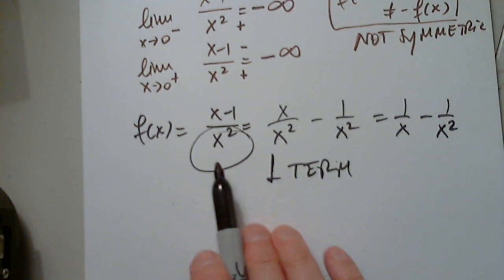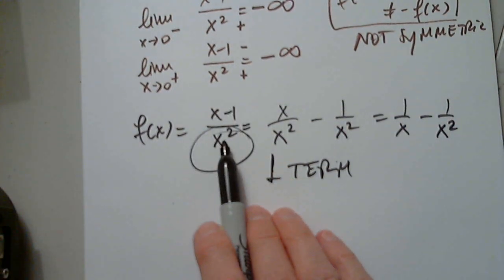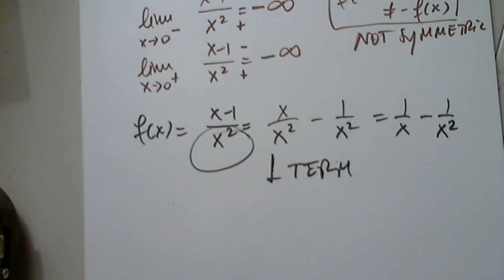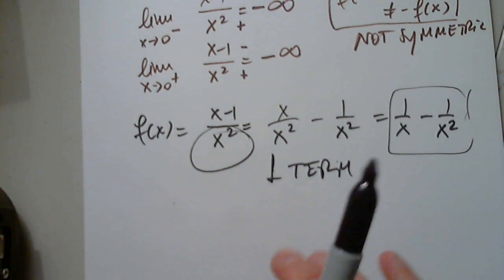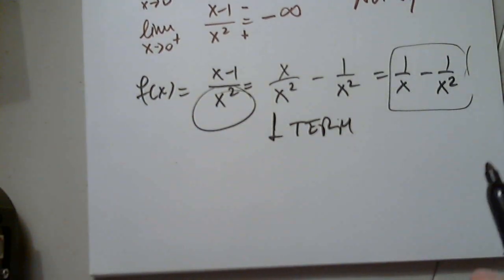You can say I don't want to do this because I'd rather you use the quotient rule. Fine. That's fine. I prefer this instead of using the quotient rule. You develop your own style.